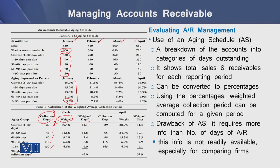By multiplying collection days with the calculated weights, we can determine the average collection period for each class of past-due accounts. Summing all these weighted days for a particular period gives us the weighted average collection period for that period of time. However, a drawback of this aging schedule is that it requires more information than just the number of days of accounts receivable, and this information may not be readily available, especially when comparing firms with each other.